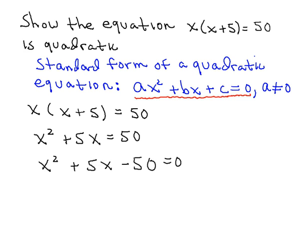And so now we have the equation in standard form. And we recognize that the coefficient of x squared, our a value in this case, will be equal to 1. The coefficient of x, which is the b value, is equal to 5. And the constant term c, in our case, is equal to negative 50.